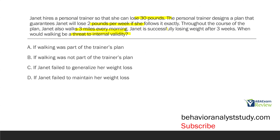If walking was not part of the trainer's plan, those three miles might become a confound. Option A — if walking was part of the trainer's plan, that is not a threat to internal validity. Option B — if walking was not part of the trainer's plan, yes, that's when it becomes an issue and a threat to internal validity. Options C and D involve generalization and maintenance, which relate to external validity, not internal validity. The answer is B: walking is a threat to internal validity when it is not part of the trainer's plan.